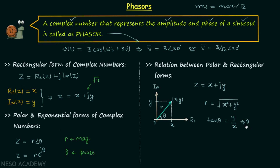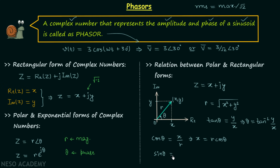From tan θ = y/x, the phase angle θ equals tan inverse of y over x. Conversely, if we know r and θ, then cos θ = x/r gives the real part x = r cos θ, and sin θ = y/r gives the imaginary part y = r sin θ. Therefore Z equals r cos θ plus j r sin θ.